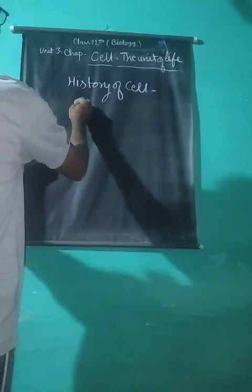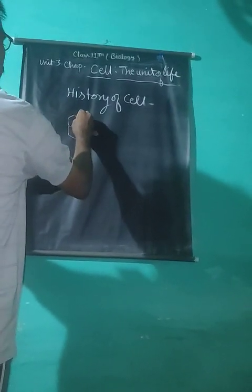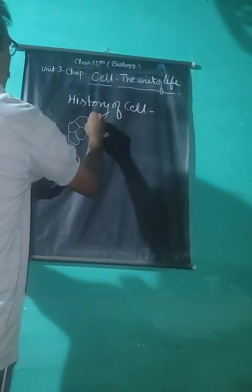The history of cell discovery begins with the publication of the book Micrographia in London by Robert Hooke in 1665. The word 'cell,' meaning a small compartment, was introduced in 1665 by Robert Hooke. He observed a honeycomb-like structure in a thin slice of cork with the help of a microscope developed by himself — a light microscope — under which he observed compartmentations of honeycomb-like structures.